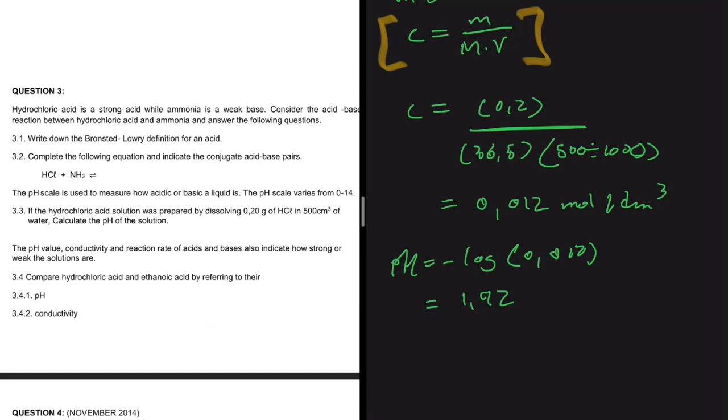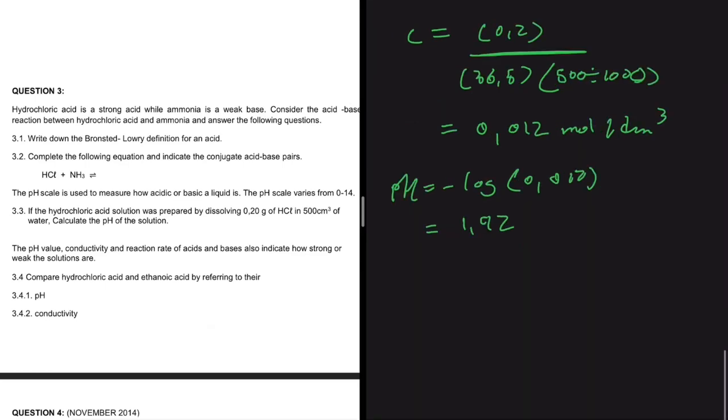Which makes sense. Hydrochloric acid is a strong acid, so you would expect the pH to be somewhat low. You don't expect a pH of 5.54 or anything like that. 3.4. The pH value, conductivity, and reaction rate of acids and bases also indicate how strong or weak the solutions are. That is true. Compare hydrochloric acid and ethanoic acid by referring to them.